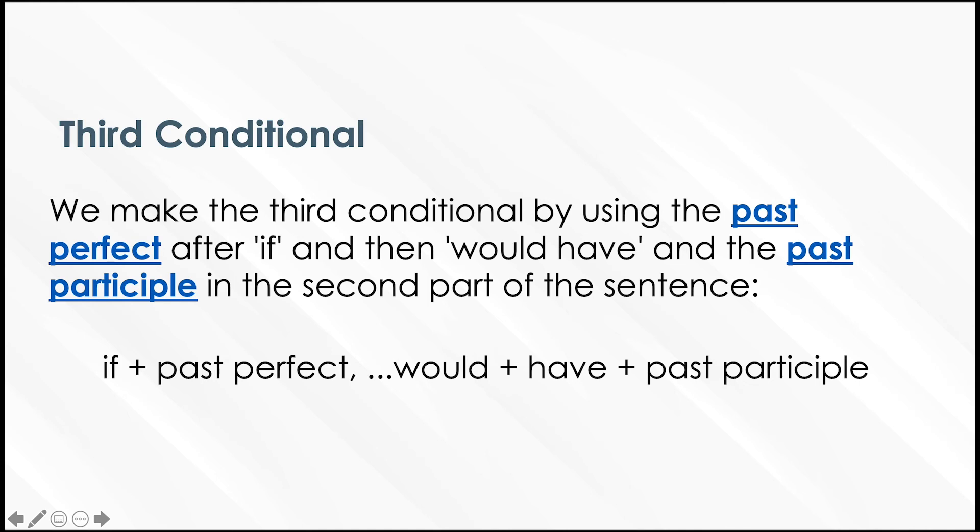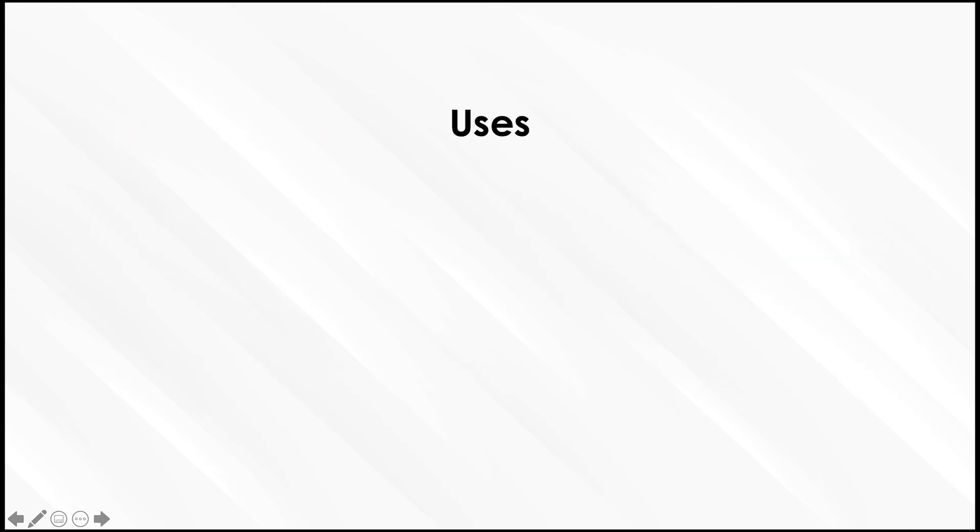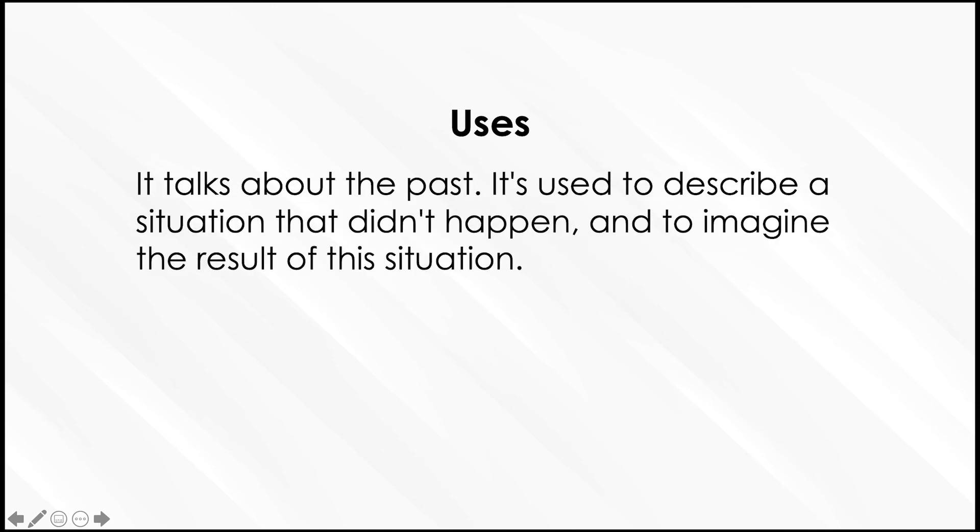The use of the third conditional. It talks about the past. It's used to describe a situation that didn't happen. Por lo general, me va a hablar de una situación o me va a describir una situación que no sucedió en el pasado.